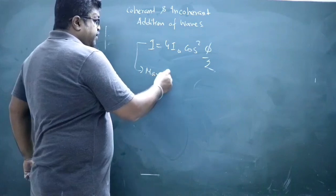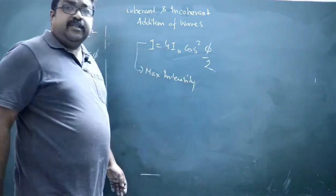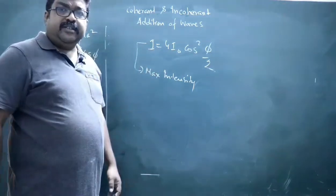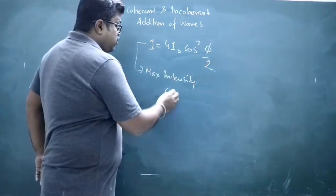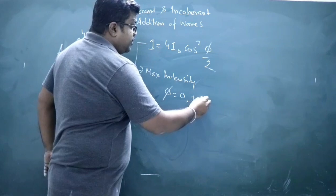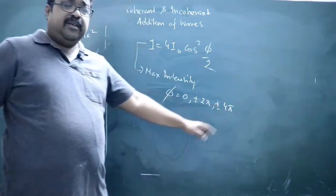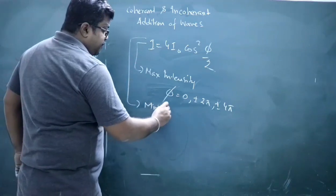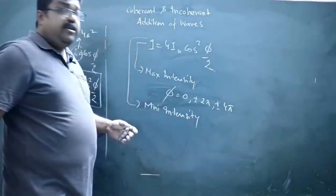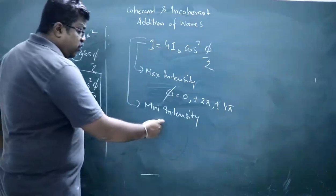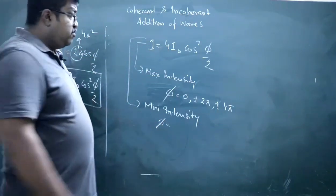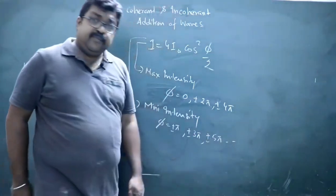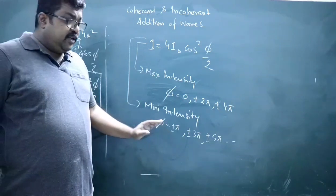For maximum intensity, I equals 4I₀, so cos²(φ/2) must equal 1, meaning cos(φ/2) equals ±1. This gives φ equals 0, ±2π, ±4π, and so on — even multiples of π. This is the condition for maximum intensity. For minimum intensity, the cos²(φ/2) term must be zero, so I equals 0. This requires φ equals ±π, ±3π, ±5π, and so on — odd multiples of π. This is the condition for minimum intensity.